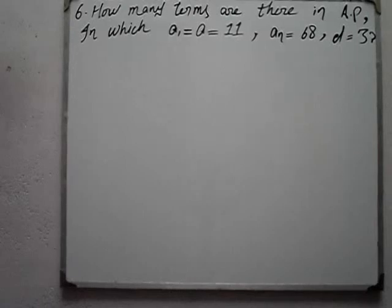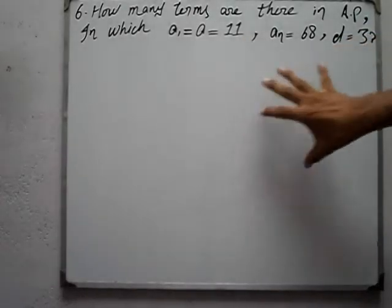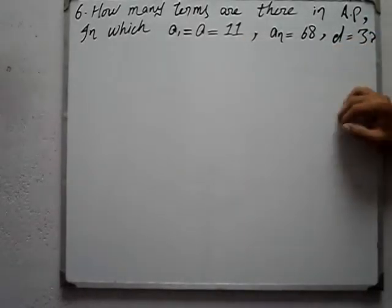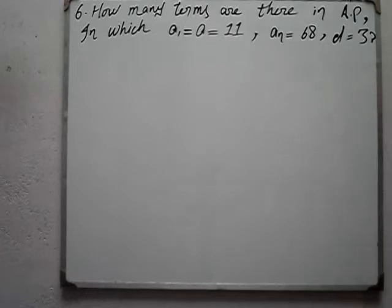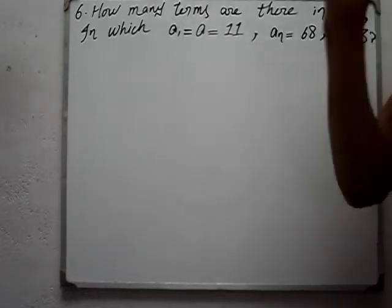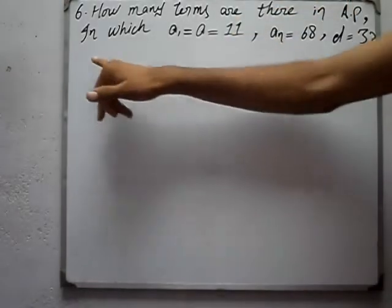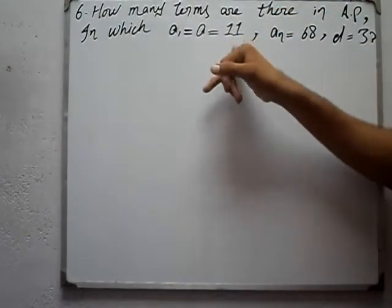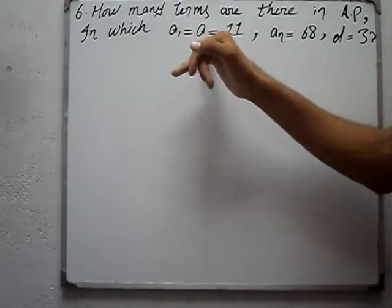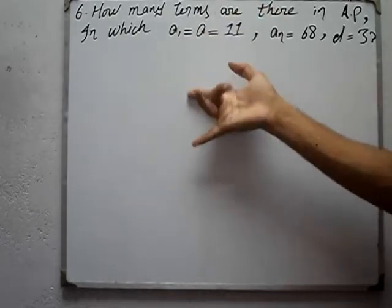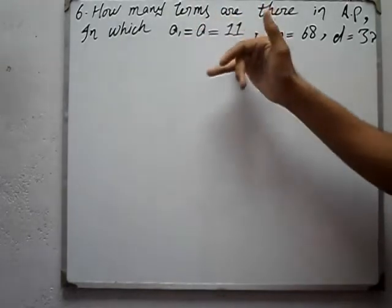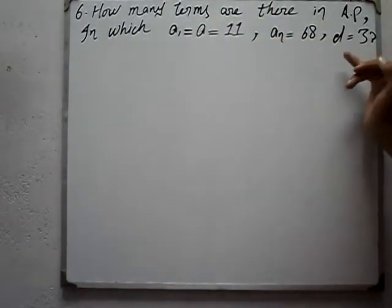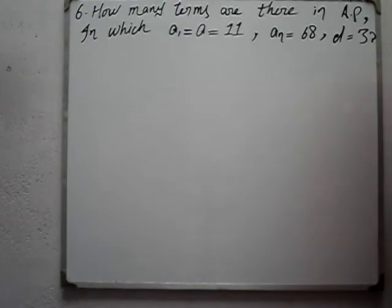Question number six is: how many terms are there in an arithmetic progression in which a1 is equal to 11, an is equal to 68, and d is equal to 3?